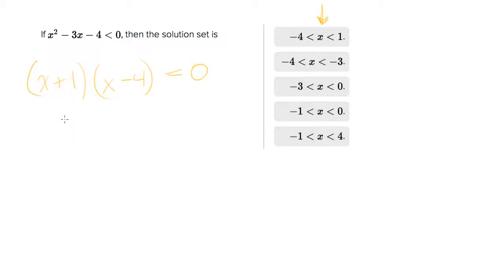Now what I want you to do is think conceptually on a number line. They want to know when is this less than 0? Well when do two numbers when multiplied together equal less than 0? They're less than 0 whenever the signs are opposite.